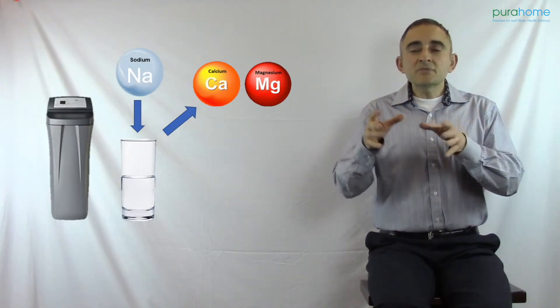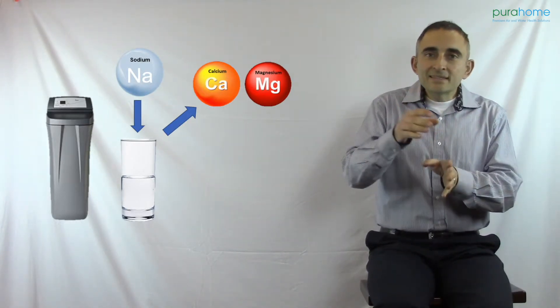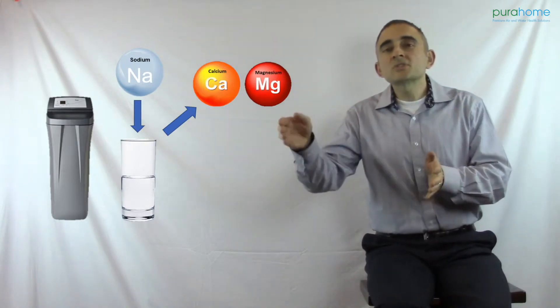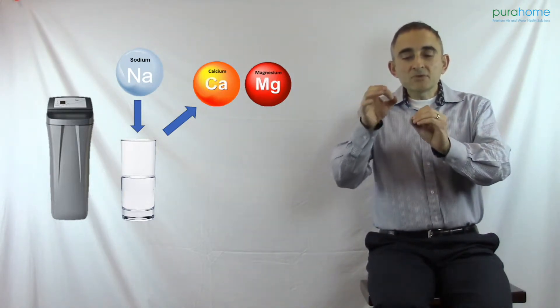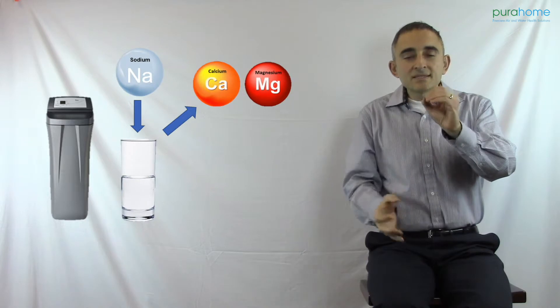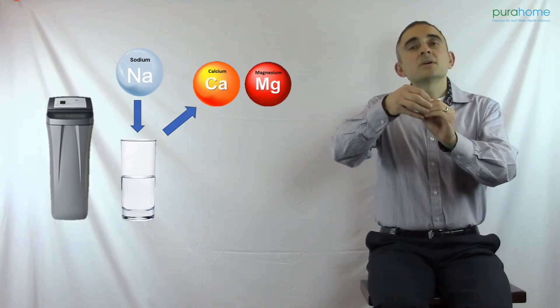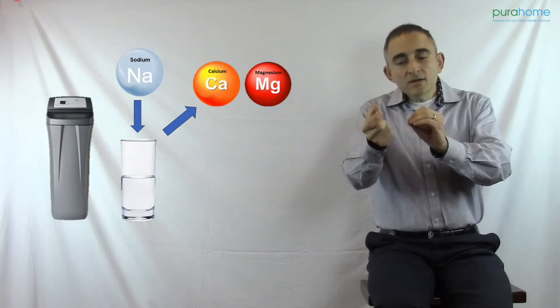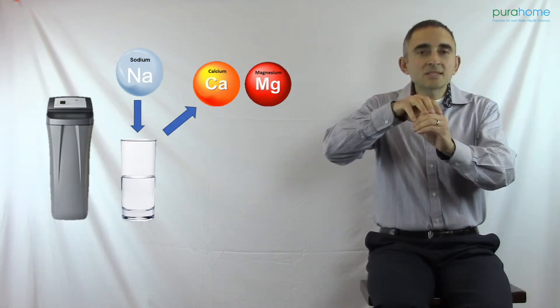So the water softener takes the calcium and magnesium out of the water and in its place replaces it with sodium. As water travels over a water softening bead in the tank, sodium goes into the water and calcium and magnesium stick on the bead.